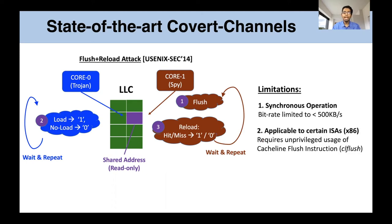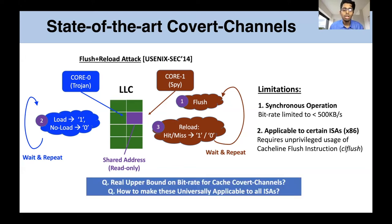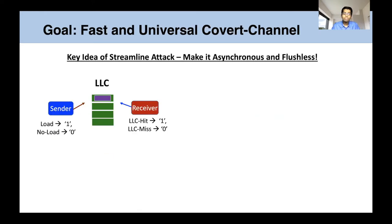Additionally, these attacks are applicable to only certain ISAs like x86 because of the requirement of unprivileged usage of flush instructions. So the question we asked was, how fast can cache covert channel attacks actually be? And can these fast attacks also be universally applicable to all ISAs? In the process of answering these questions, we came up with a new attack, Streamline, that is both fast and universal.